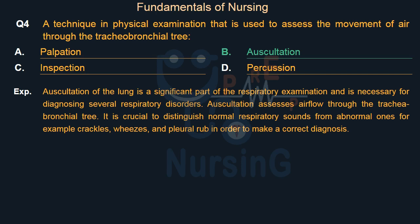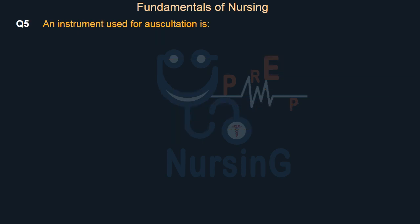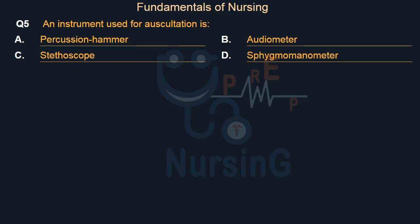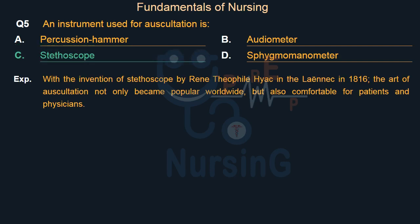An instrument used for auscultation is: Option A — Percussion hammer. Option B — Audiometer. Option C — Stethoscope. Option D — Sphygmomanometer. Right answer is Option C: Stethoscope. With the invention of the stethoscope by René Théophile Hyacinthe Laënnec in 1816, the art of auscultation not only became popular worldwide, but also comfortable for patients and physicians.